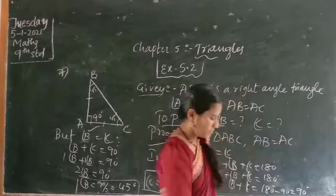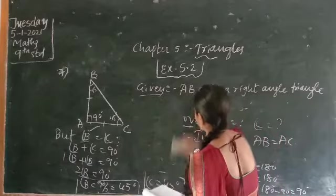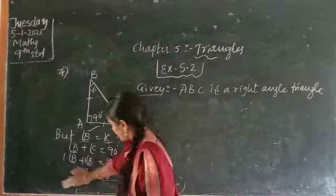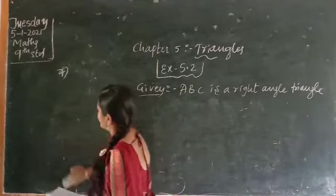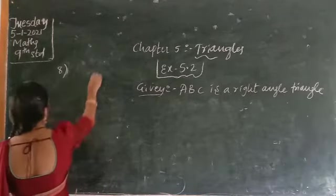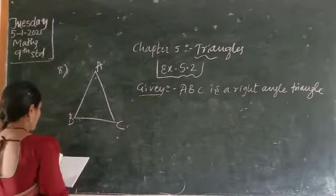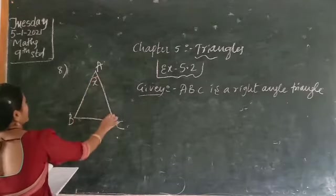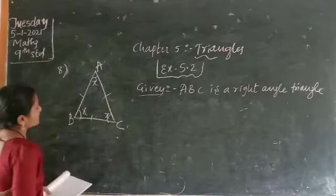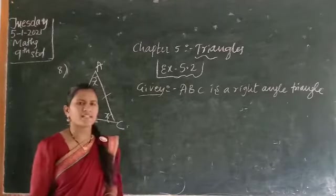Draw the triangle. Label the vertices A, B, C. If you draw it, all 3 sides are equal. In this triangle, we are taking the angles as X each. Angle AB equals angle BC equals angle CA — why? Because all 3 sides are equal, so the angles opposite to them are equal.